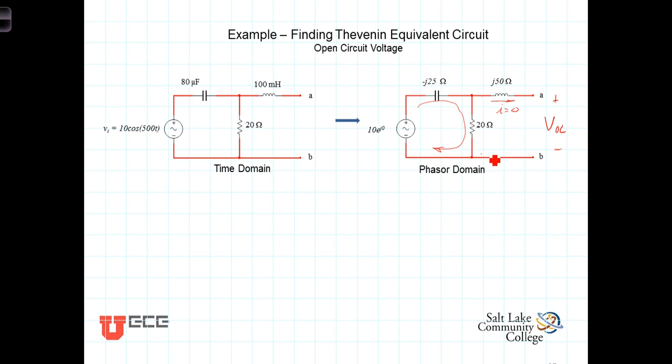And say then that V open circuit is equal to 10 times 20 divided by 20 plus J minus J25. And when you do that, you get that the open circuit voltage is equal to 6.25 e to the J 51.34.